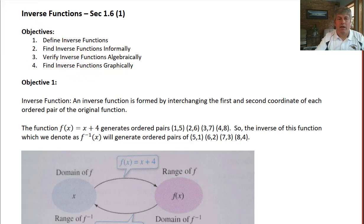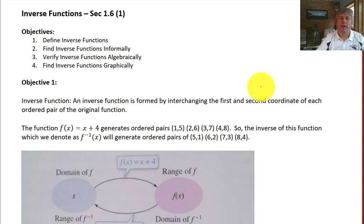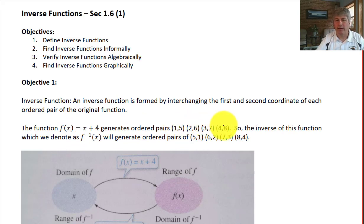An inverse function is a function that's formed by interchanging the first and second coordinate, or the x and y coordinate, of each ordered pair of the original function. So if we have a function f(x) = x + 4, it's going to generate ordered pairs of (1,5), (2,6), (3,7), and (4,8).